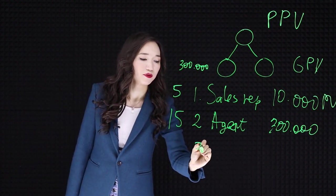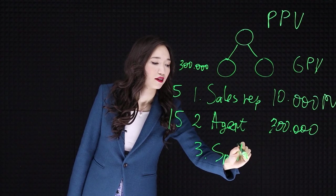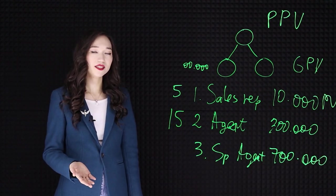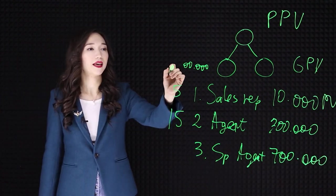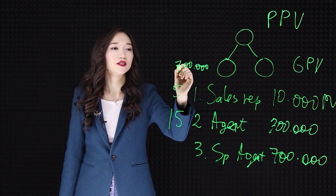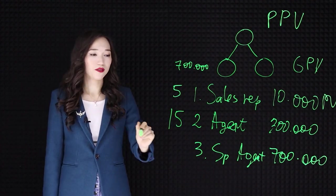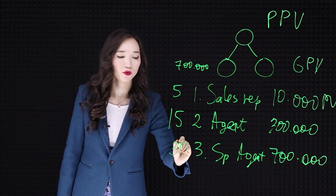Third type, special agent. When you are a special agent and your smaller leg makes 700,000 PV, you get a score 30, two times more money.